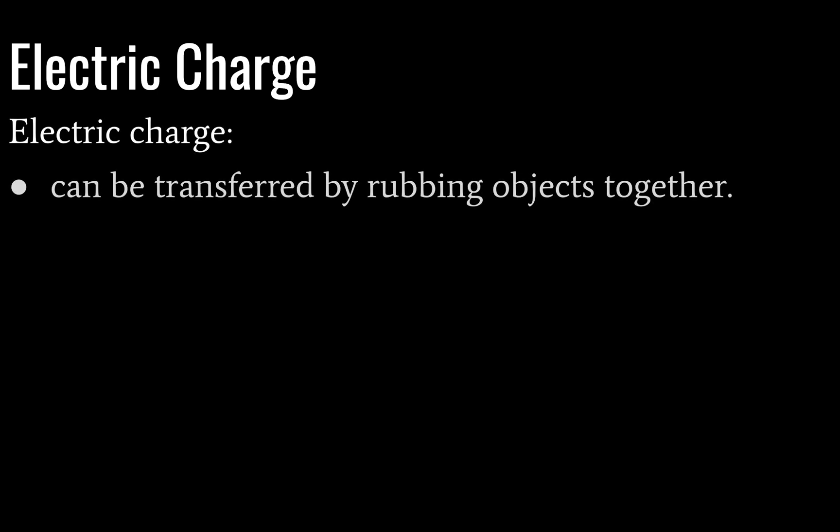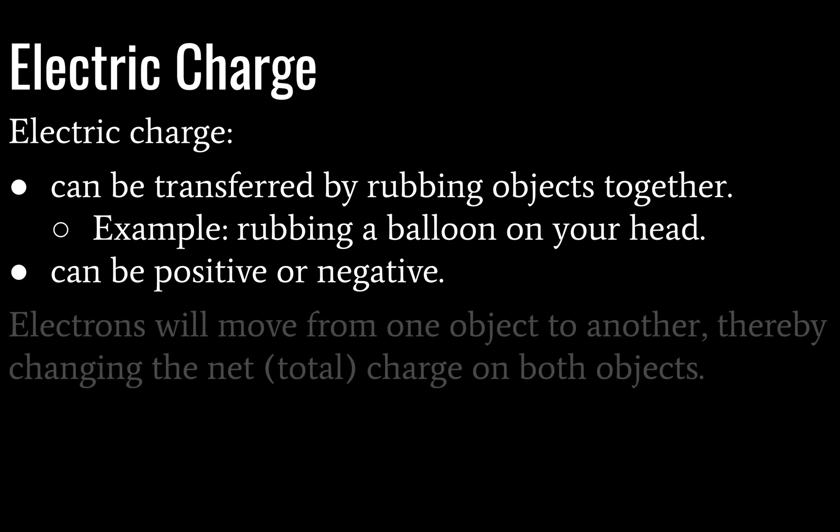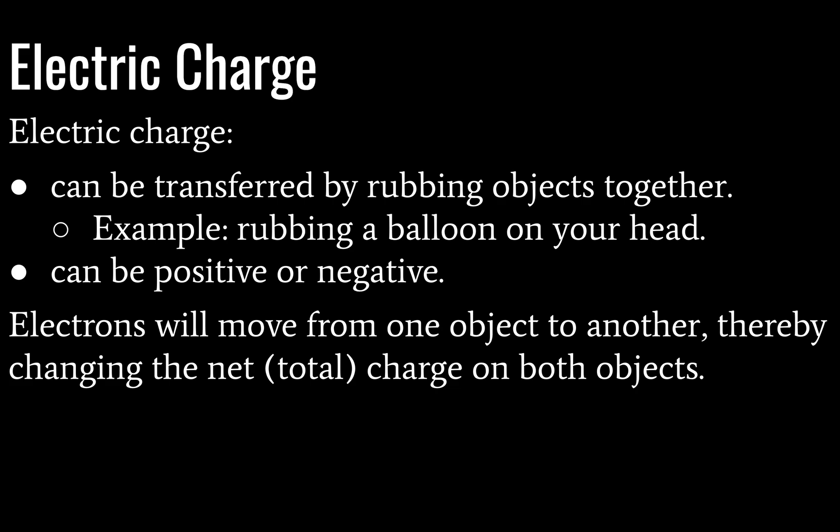So first, let's talk about electric charge. It can be transferred by rubbing objects together. An example of this would be rubbing a balloon on your head. If you've ever done this, it's pretty fun. That balloon will then stick to stuff, and that's an example of Coulombic force. Electric charge can be either positive or negative, and we'll see the sources of those momentarily. Electrons move from one object to another, thereby changing the net or total charge on both objects. And as I said earlier, these charged objects exert a force on each other, such as the balloon on bits of your hair or against a wall, which is a fun time. Don't do it on a humid day. It just won't work.